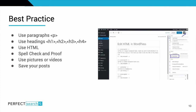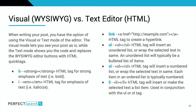Here are some best practices. Use proper paragraph HTML tags, and make sure you're using headings in HTML. Spellcheck and proofread — writing in a Word document lets you use their grammar tool, and Grammarly is also pretty good. Get a second or third pair of eyes to make sure your text is readable and free of errors. Use pictures or videos because users love them, and save your posts periodically. When writing posts, you have the option of using visual or text mode — visual mode shows your post as-is, while text mode shows the code and HTML quick tags.